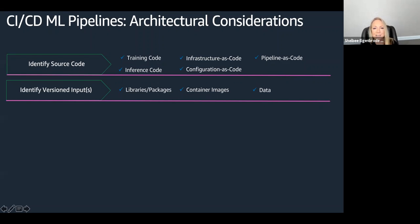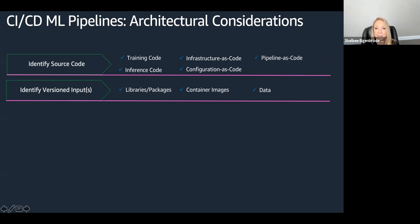With machine learning, you have that new versioned input to consider, which is data. Your training data becomes a versioned input that you need to consider in terms of being able to establish that end-to-end traceability that we see with CI/CD pipelines.